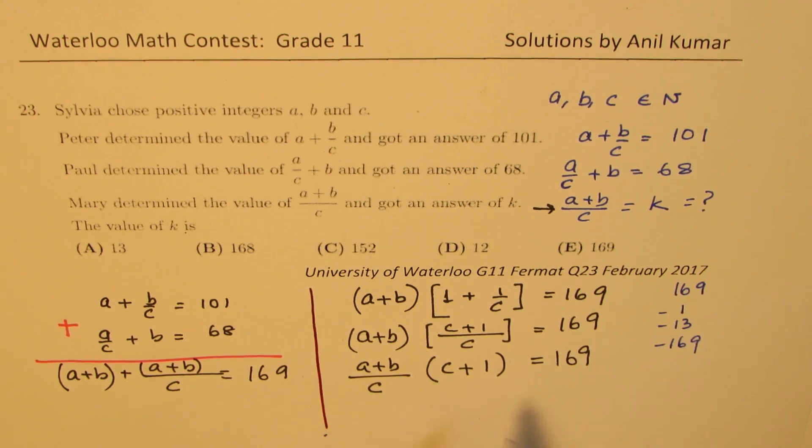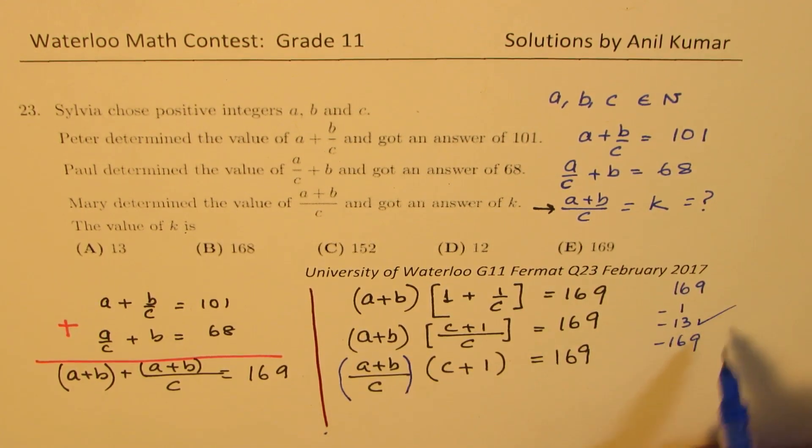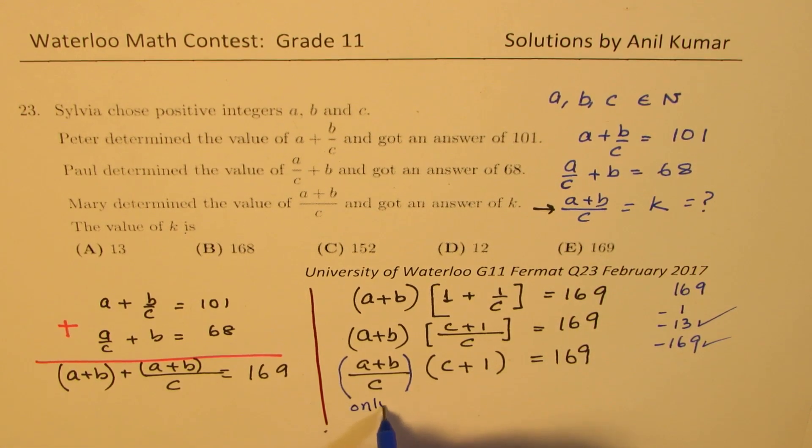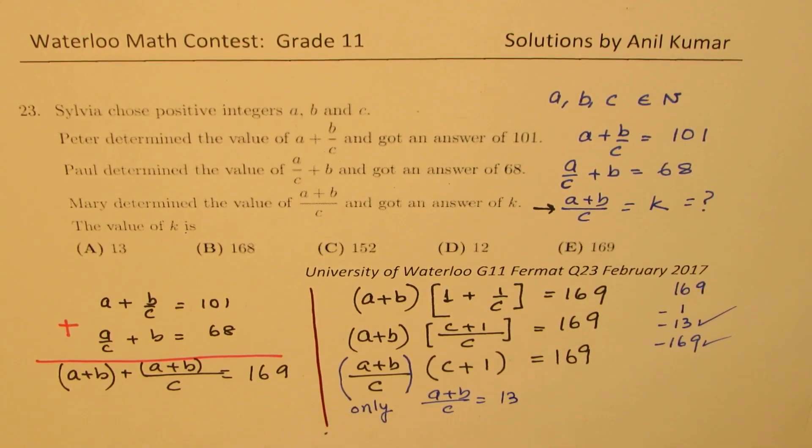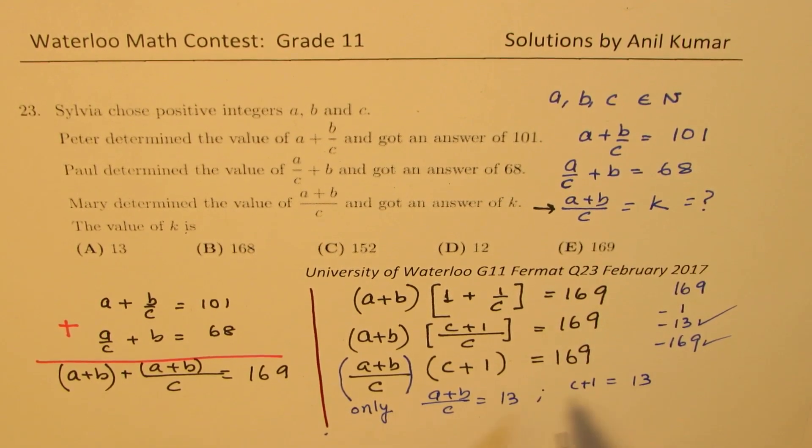Now this number 169, A plus B over C could be either 13 or 169. If I place this as 169, then C plus 1 should be 1. But that is not possible since C cannot be 0. So only possible solution is A plus B over C should be equal to 13. In that case, we get C plus 1 also as 13. So it makes sense. It becomes 169.